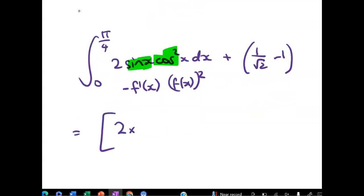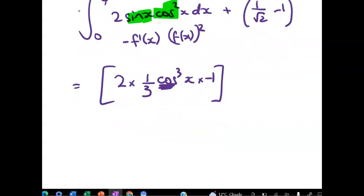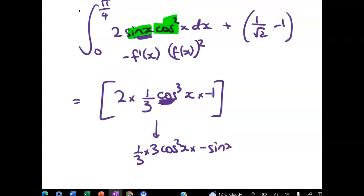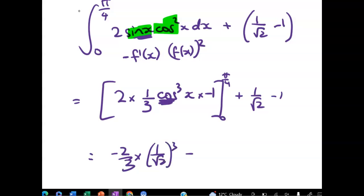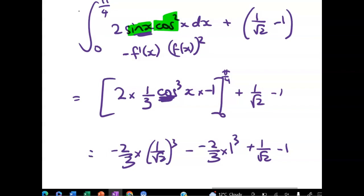It's going to be 2 times 1 third cos cubed of x times negative 1. Right, now the reason I need the negative 1 is to remember that the derivative of cosine is not sine, it's negative sine. So when I differentiate this, this is going to generate 1 third times 3 cos squared of x, but then it's going to be times negative sine x. And we don't want the negative sine x, we just want the positive sine x. So then we can just work it out, right? And you'll get negative 2 thirds times 1 on root 2 cubed, minus negative 2 thirds times 1 cubed. Okay, so we get down to the same thing, and we get there so much faster than doing the u substitution.